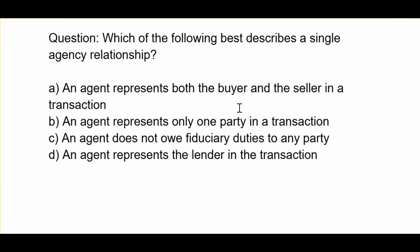Which of the following best describes a single agency relationship? A. An agent represents both the buyer and the seller in a transaction. B. An agent represents only one party in a transaction. C. An agent does not owe fiduciary duties to any party. D. An agent represents the lender in the transaction.